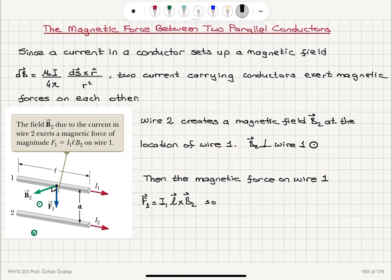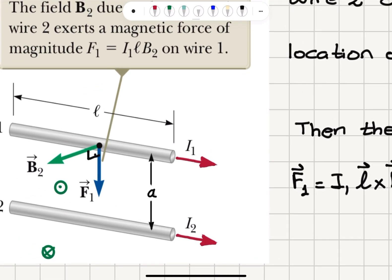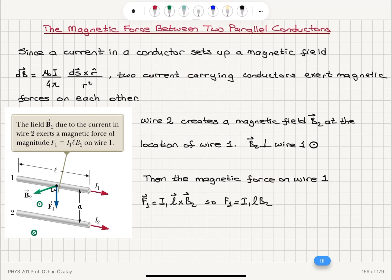For the force F1, we get I1 times L times B2. The direction of this force is found using L cross B: the four fingers of the right hand point towards the current direction, curl them out of the page in the direction of the magnetic field. The thumb points towards wire 2 — that's the direction of force F1. So F1 has a magnitude I1 L B2.